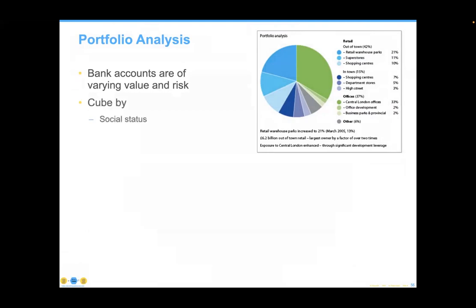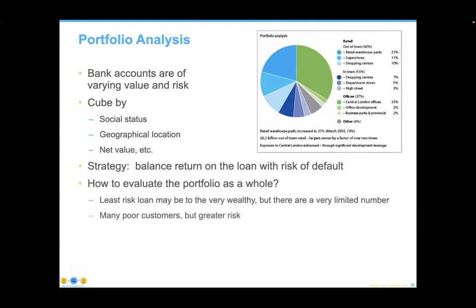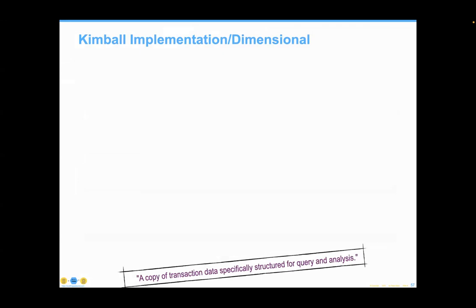Another example: a banking analysis with cube dimensions like social status and geographic location. Some organizations are now trying to predict whether you're a good candidate for credit based on your social history. The approach to banking is to balance the loan with the risk of default — you can loan more money to people likely to pay you back, but charge less interest rate. This gives you a couple of solutions on where to go and what to do. In this context, we call this a Kimball warehouse. His definition is much simpler than Inmon's: a copy of transaction data specifically structured for query and analysis.